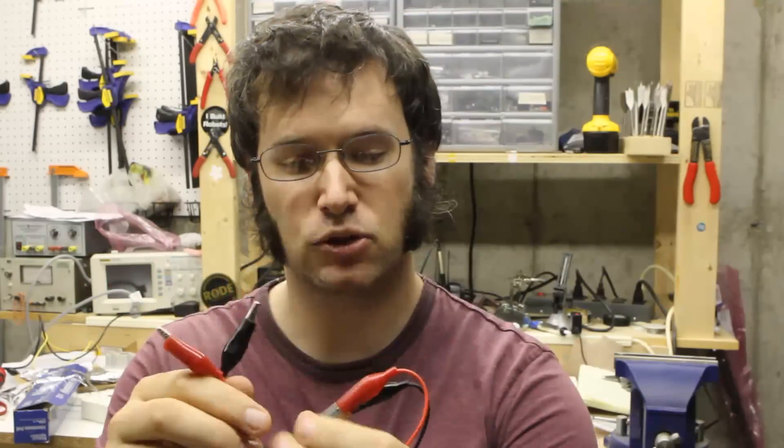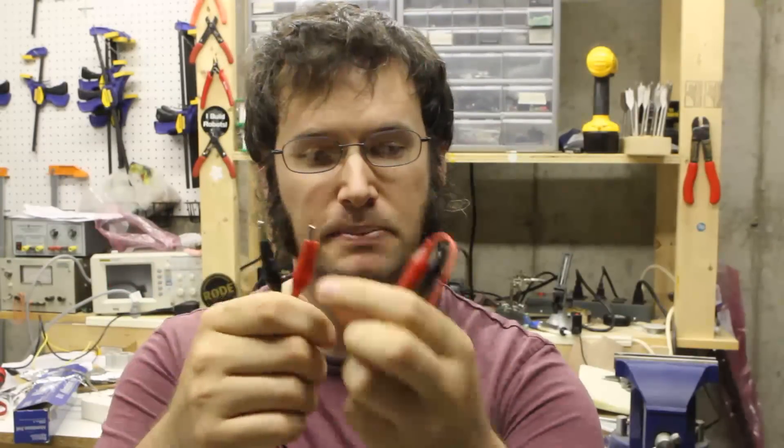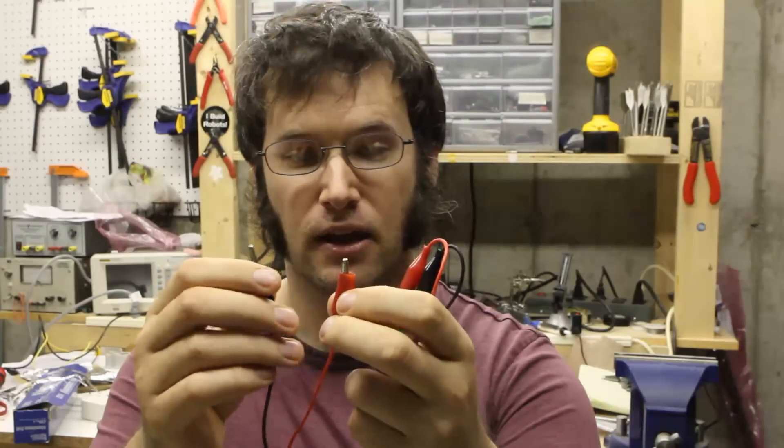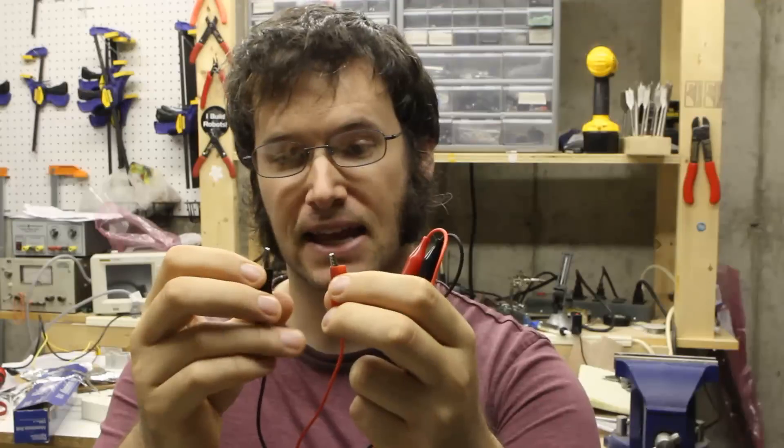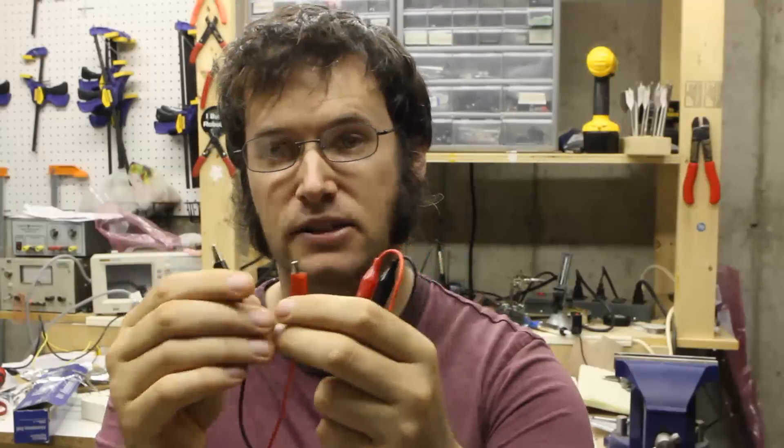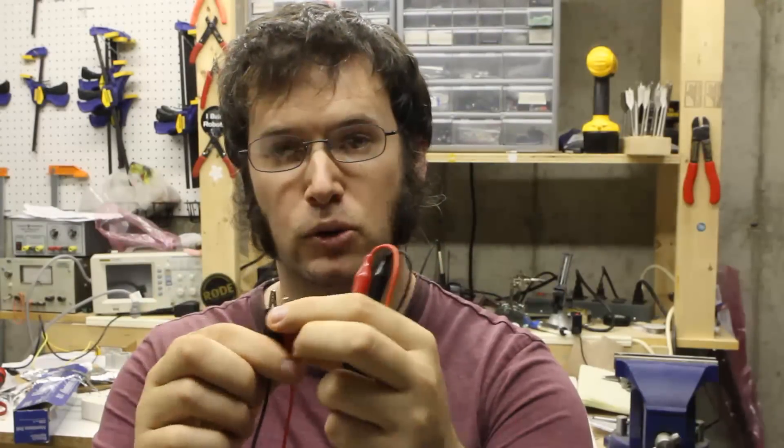The basic premise of this sensor is there's a main sensor module and two alligator clips. When these alligator clips are an open circuit, it's a different state on the camera X compared to when it's a closed circuit, and you can have the camera X trigger to take a picture in either of those modes.